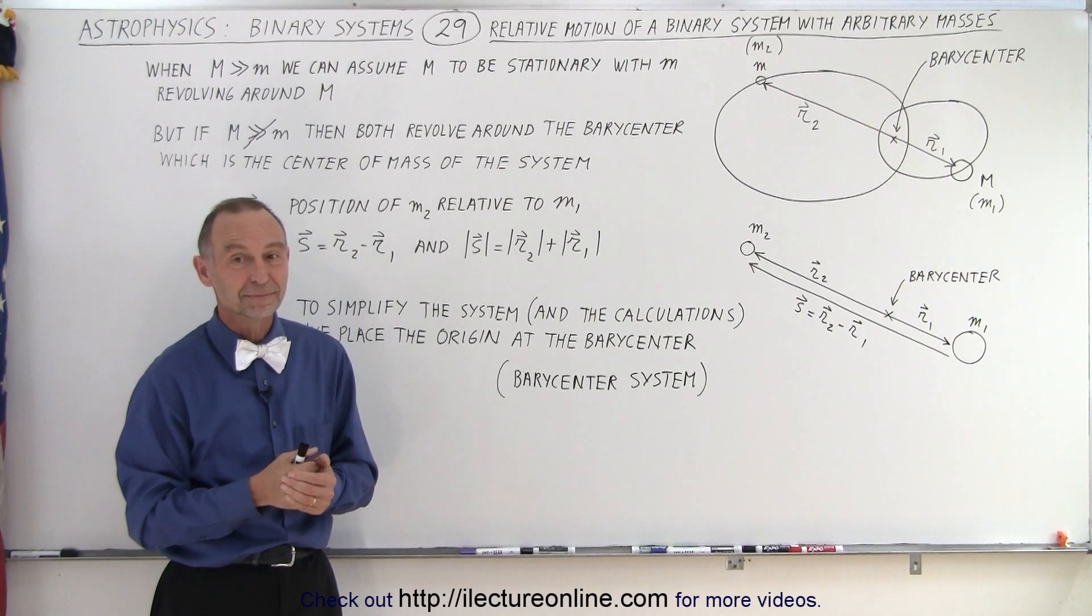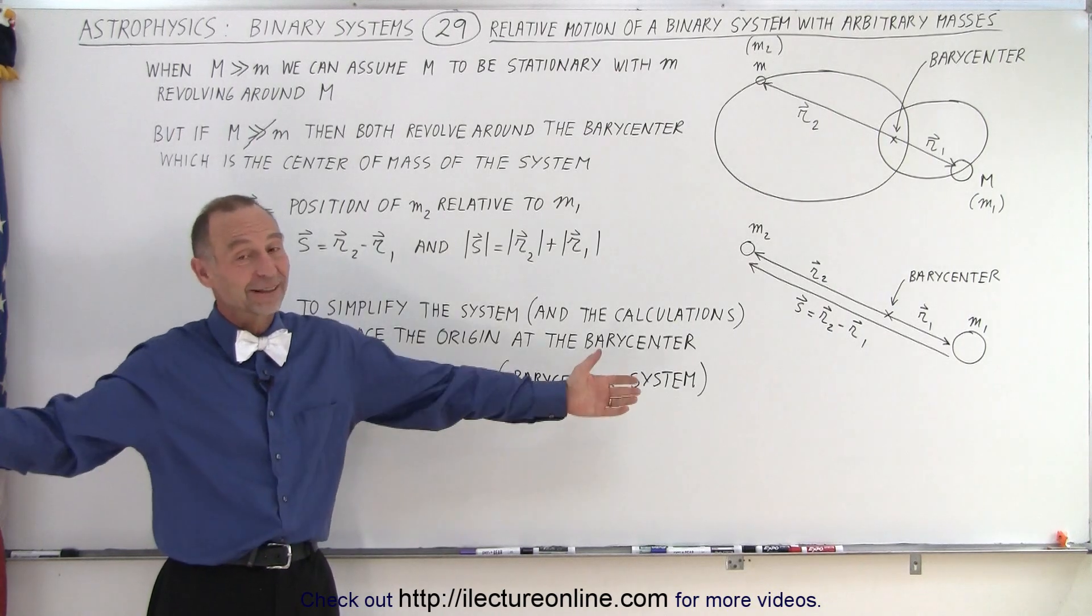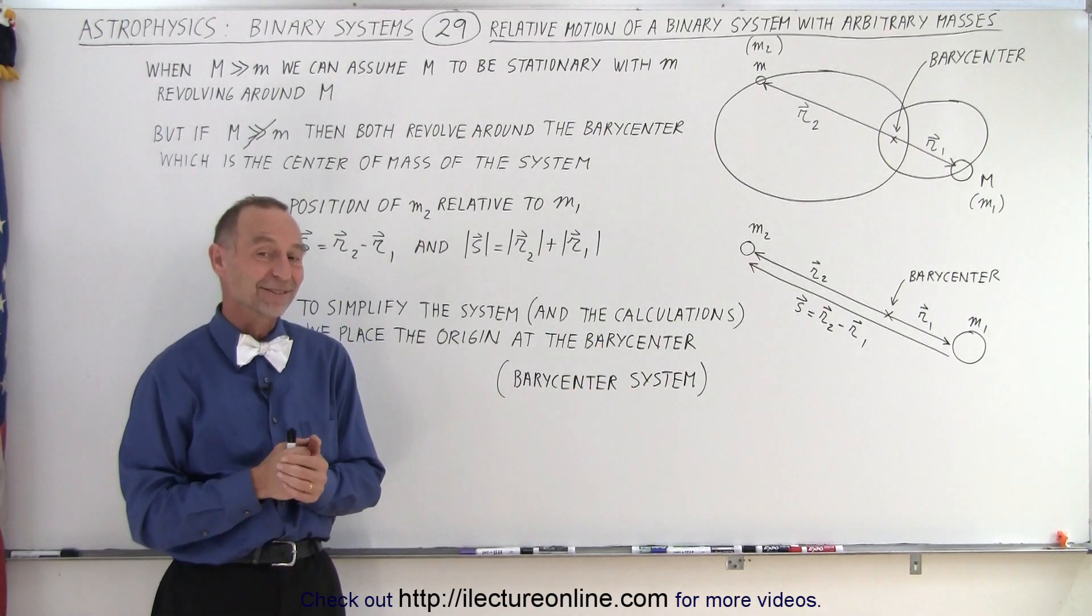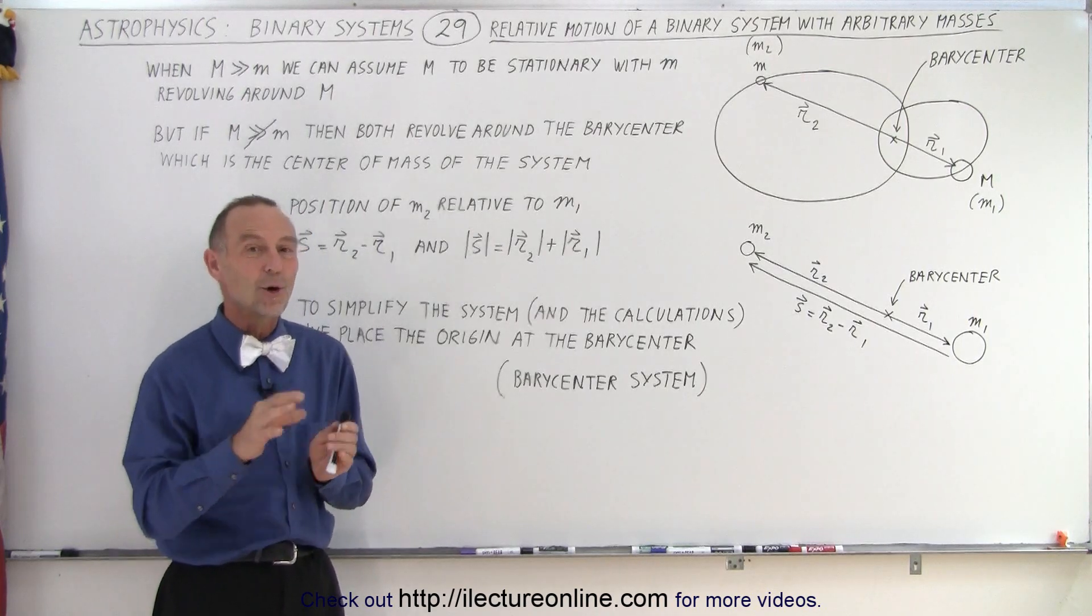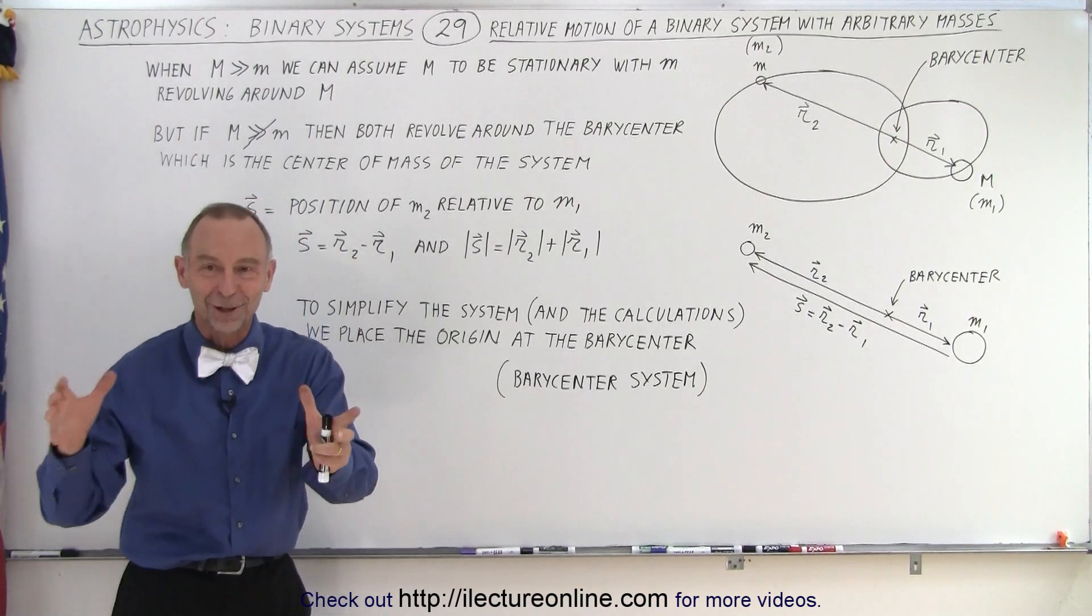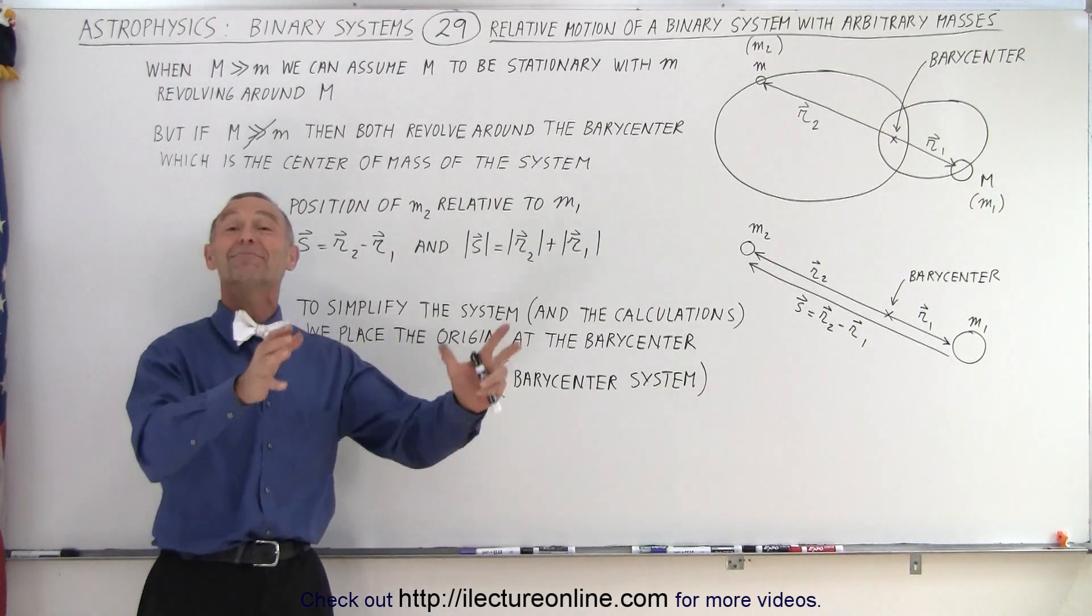[Student:] Yeah, but Jupiter is not gaseous. [Instructor:] It's gaseous, but it has a lot of mass. It's got a lot of gas, so it does make a difference. It turns out that if you could actually detect it, all nine, well, I still like to call Pluto a planet, all eight planets...